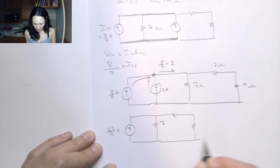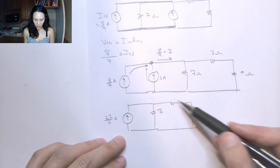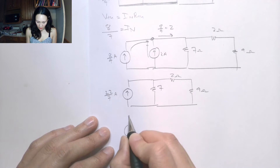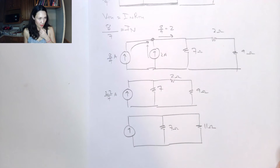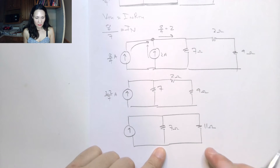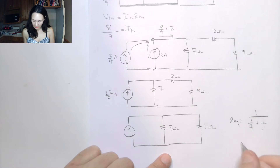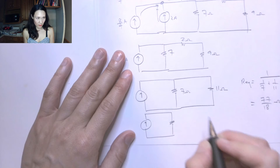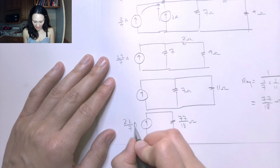I'm going to add the 2-ohm and 9-ohm resistors in series, giving 11 ohms. So now I have a circuit with one 22/7-amp current source, a 7-ohm resistor in parallel with an 11-ohm resistor. The R-equivalent is 1 over (1/7 + 1/11), which gives me 77/18 ohms. I can replace these two resistors with one equivalent resistor of 77/18 ohms in parallel with a 22/7-amp current source.